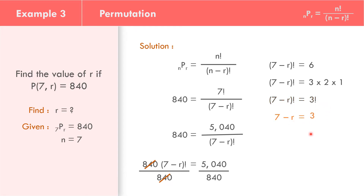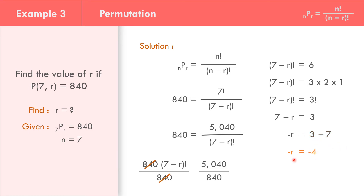So 7 minus R equals 3. Solving for R: copy negative R, bring down 3, move 7 to the right side as negative 7. So negative R equals 3 minus 7, which is negative 4. Dividing both sides by negative 1, R equals 4. We now have the value of R, which is equal to 4.